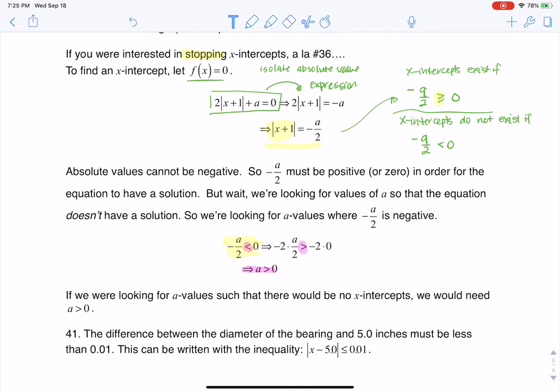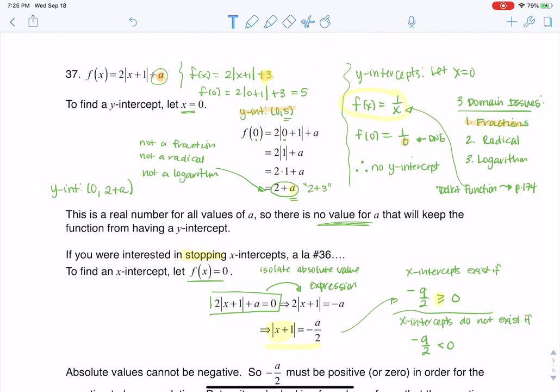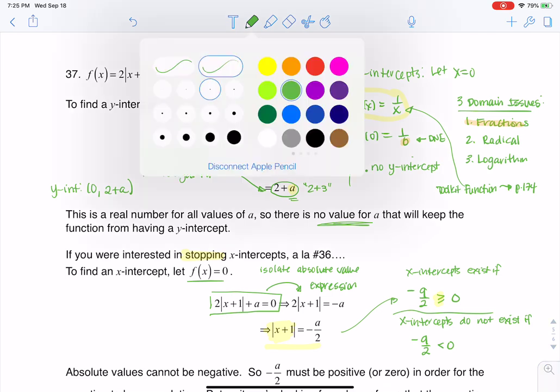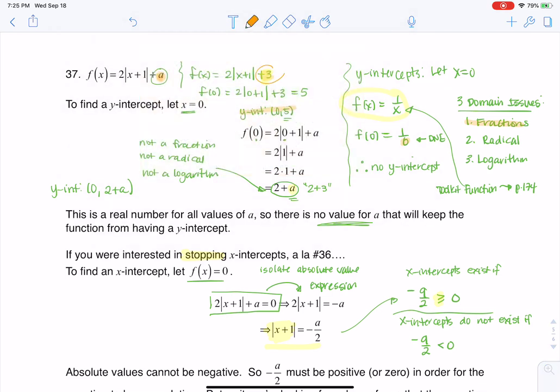And to go back to where we were before, if you remember back up here, I chose a being 3. So by the work I just did for number 36, yes my y-intercept was at (0, 5), but because this was positive, I also know there were no x-intercepts.